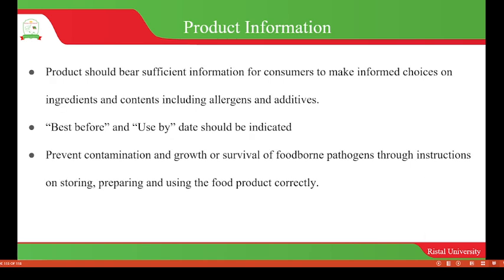Products should bear sufficient information for consumers to make informed choices on ingredients and contents, including allergens and additives. This is also very important because some consumers are allergic to certain ingredients, so if ingredient names are included in the labeling, it will help the consumer decide whether to consume the product or not, preventing exposure to allergens or additives unsuitable for them.